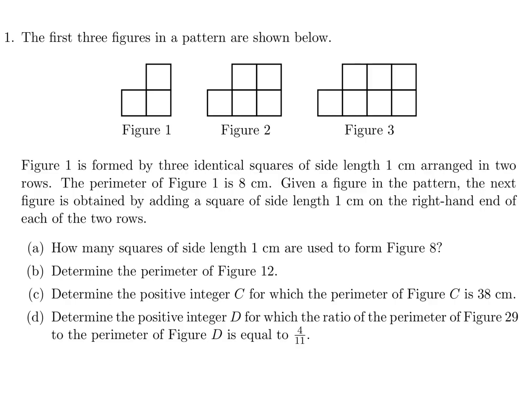The first three figures in a pattern are shown below. Figure 1 is formed by three identical squares of side length 1 cm arranged in two rows. The perimeter of Figure 1 is 8 cm. Given a figure in the pattern, the next figure is obtained by adding a square of side length 1 cm on the right-hand end of each of the two rows. How many squares of side length 1 cm are used to form Figure 8?